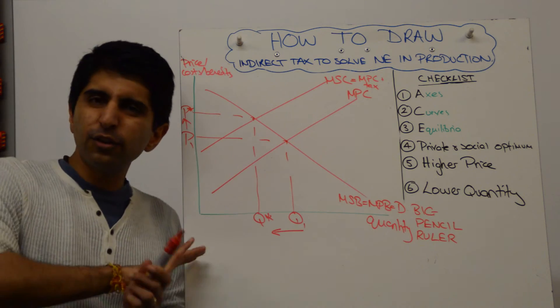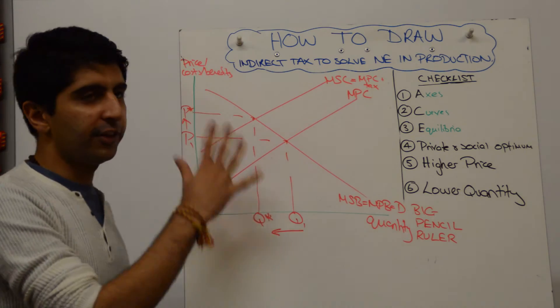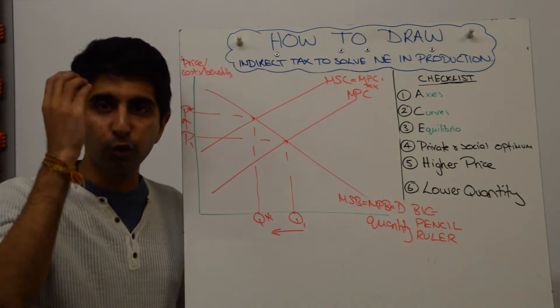That is the diagram done. There is no need to do anything extra. Even though you can do it, there is no need to. That has done the job. Then we go, as we always do, to our mental checklist.